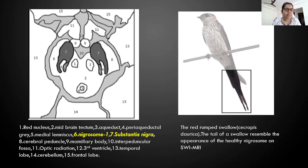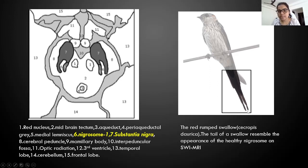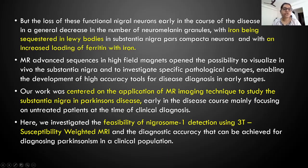Coming to the anatomy, here is an axial midbrain section showing the red nucleus indicated by one, two being the tectal part of the midbrain, three is the aqueduct, four is the periaqueductal gray matter, five is the medial lemniscus, and six is the nigrosomes, seven is the substantia nigra. Here is an image showing the red-rumped swallow. The tail of the red-rumped swallow resembles the appearance of healthy nigrosome on susceptibility-weighted imaging of MRI. Loss of dysfunctional nigral neurons early in the disease results in a general decrease in the number of neuromelanin granules, with iron being sequestrated in the Lewy bodies in substantia nigra pars compacta neurons and with increased loading of ferritin with iron.